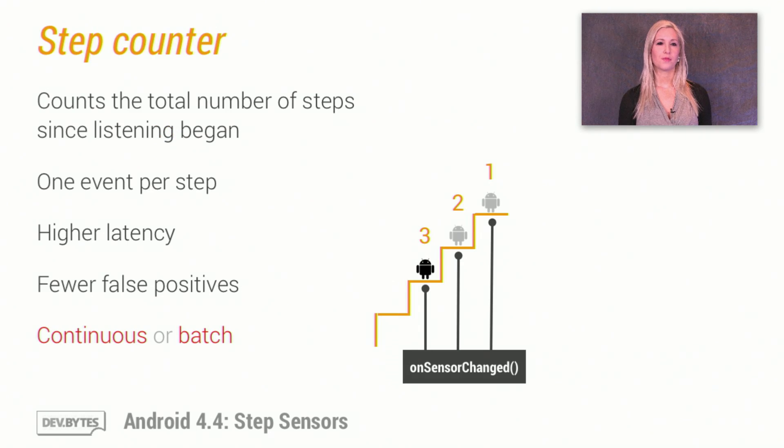The step counter is similar to the step detector in that it also sends one event per step. However, the value it sends is a cumulative number of steps. The step counter also takes a little longer to process the event, but it produces fewer false positives. So when accuracy is paramount, use the step counter. You can also request these events as continuous or batched.